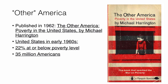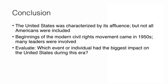In conclusion, even though the United States was considered affluent, that's a generalization — most Americans were not included in this affluence. This is also the beginning of the modern civil rights movement, involving many people beyond Martin Luther King Jr. By the 1950s, this is the start of that phase. As you finish this lecture, think about which event or individual had the biggest impact on the U.S. during this era.